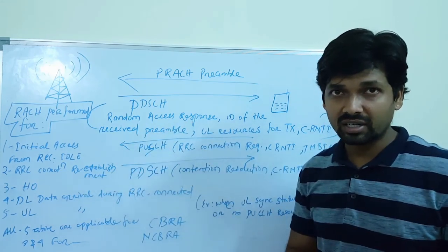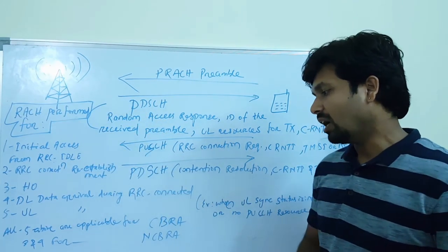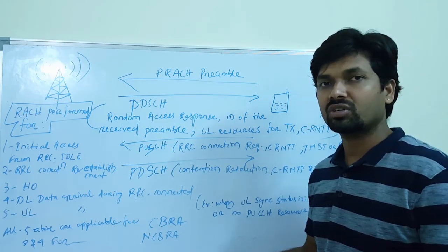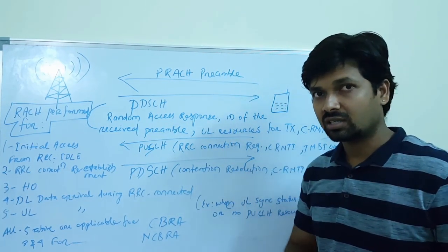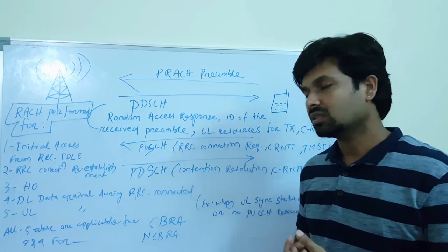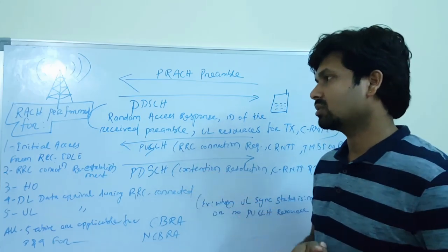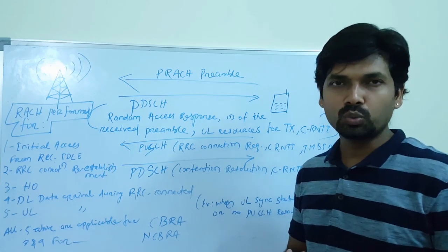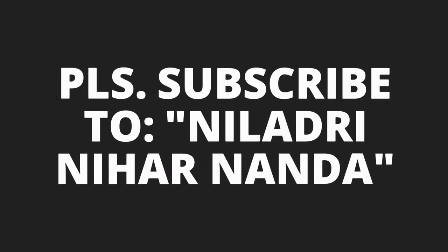I hope you enjoyed and understood the difference between contention-based and non-contention-based (contention-free) random access, why random access is performed, and where non-contention-based is used — for handover and downlink data arrival during RRC connected state. For all other reasons, contention-based random access is used. The collision chance is zero in non-contention-based because the E-NodeB allocates the preamble ID to the UE initially. That's all for today — thank you so much and bye!